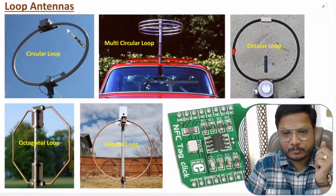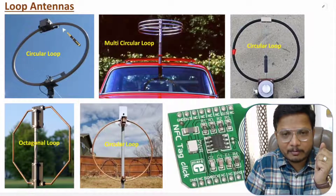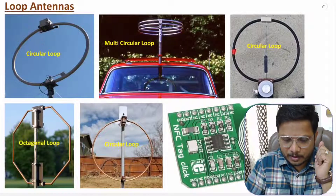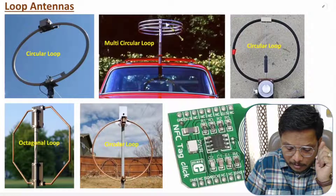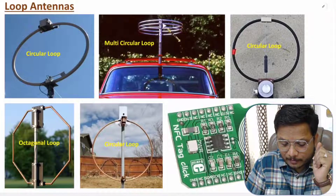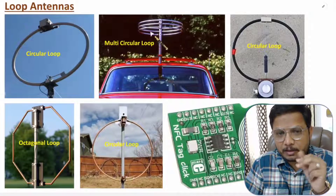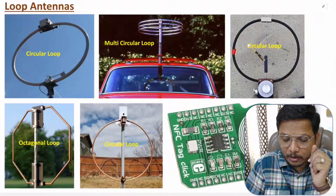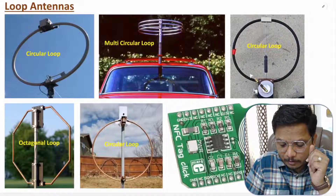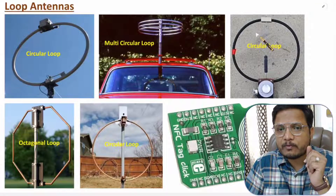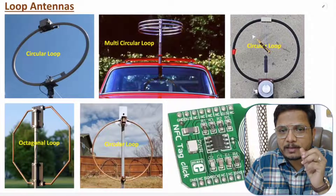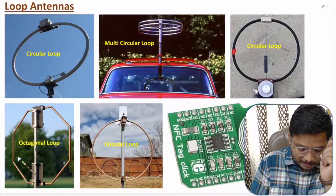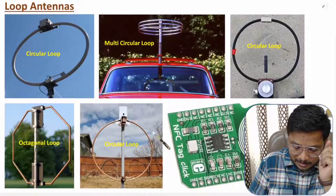Here you can observe a large circular loop antenna made for HF frequency communication. Here we have a multi-circular loop mounted on a car for AM reception. Here also we have a circular loop antenna utilized for 250 MHz frequency communication. And here you can observe an octagonal loop as well.